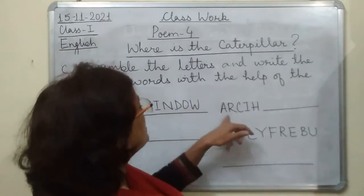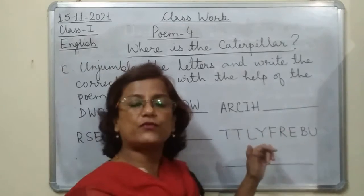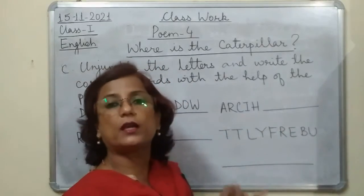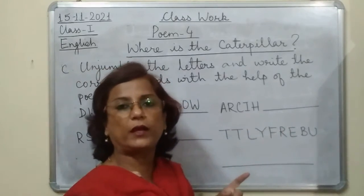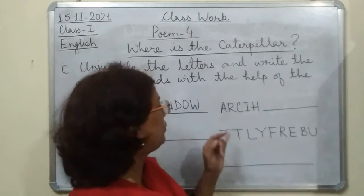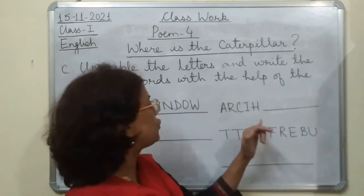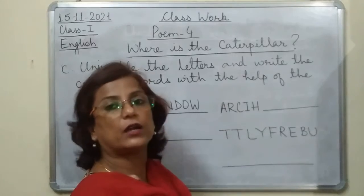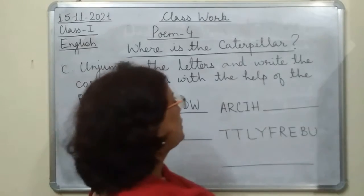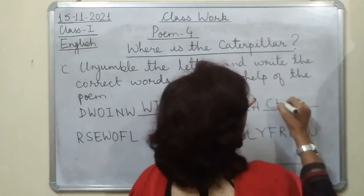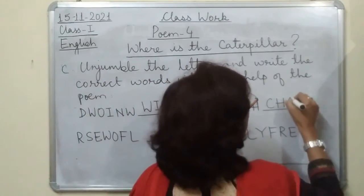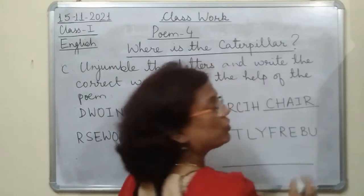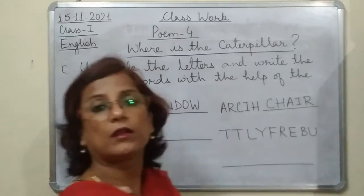Now see the second word. I am sure this word you can also identify by looking at its letters: A, R, C, I, H. The correct word is C, H, A, I, R — 'chair.'